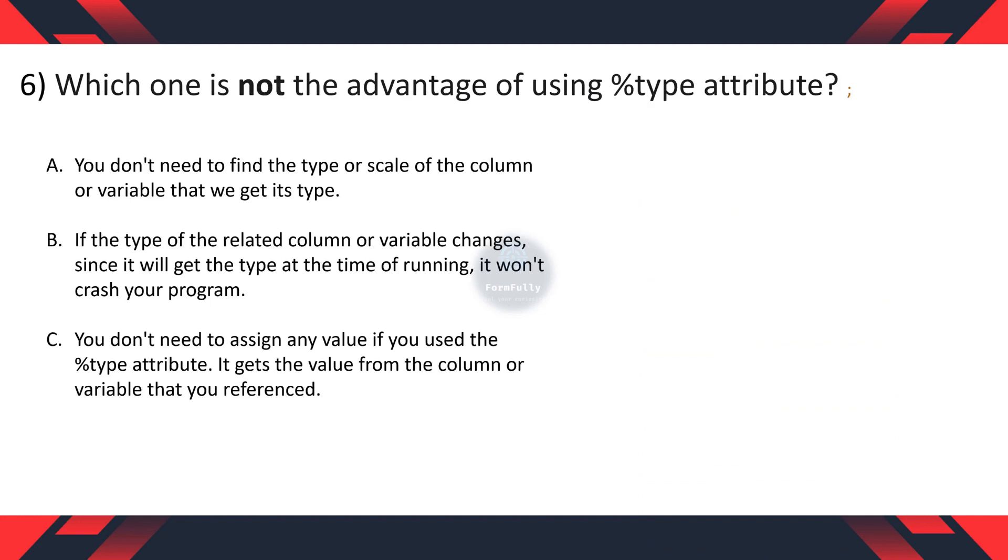Question 6: Which one is not the advantage of using percent type attribute? A. You don't need to find the type or scale of the column or variable that you get its type. B. If the type of the related column or variable changes, since it will get the type at the time of running, it won't crash your program. C. You don't need to assign any value. If you use the percent type attribute, it gets the value from the column or variable that you reference.